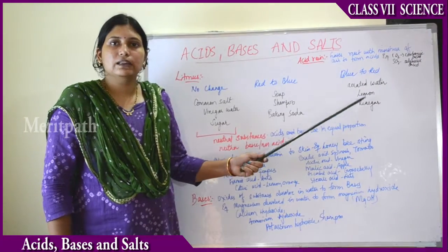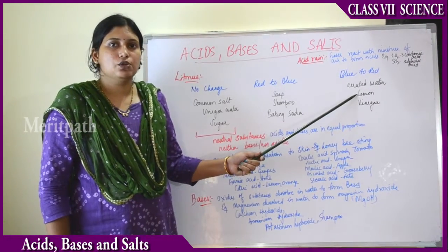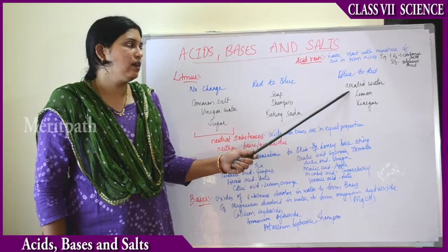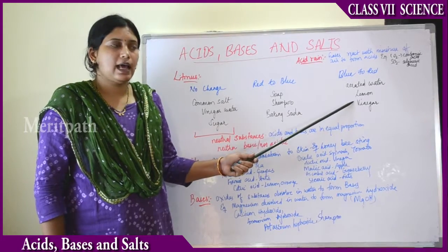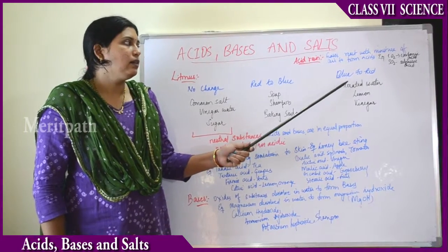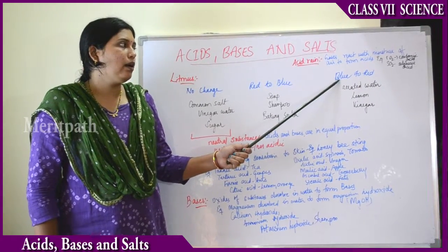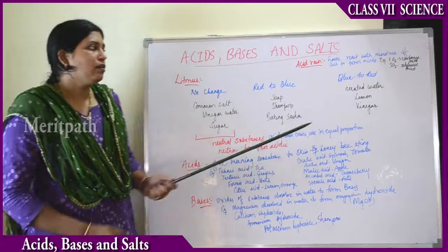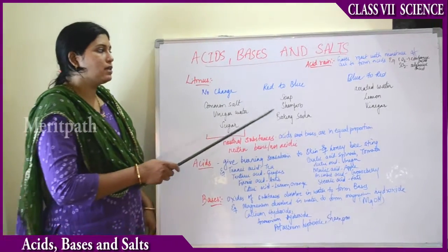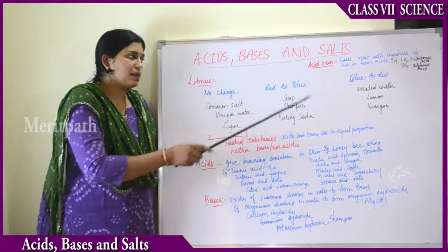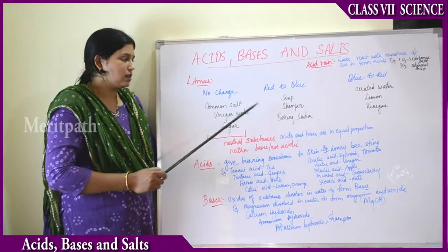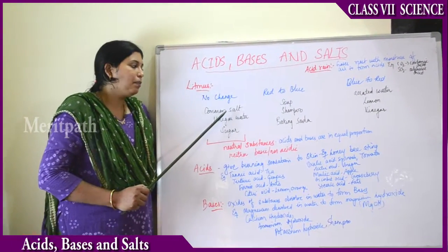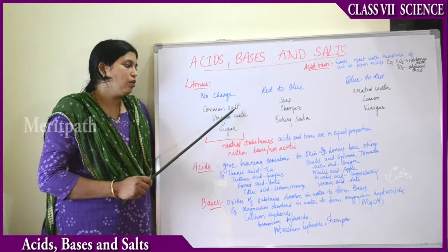When we add litmus strips or litmus solution to aerated water, lemon, and vinegar — these are acidic solutions, which are acidic in nature; they contain acid in them — they turn blue litmus paper to red color. This is how litmus acts on these specific substances.